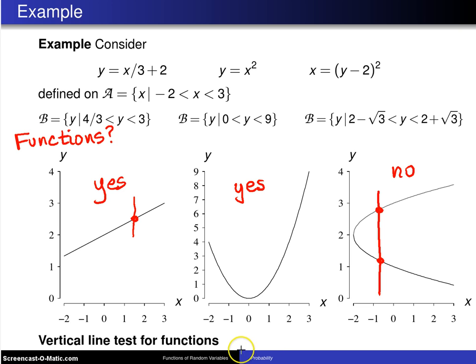Likewise here, if I choose any x value, let's just choose x, but I could choose any of them, it hits the graph of the relationship just once, and that works for any value in script A here, so this is a function. That's it.